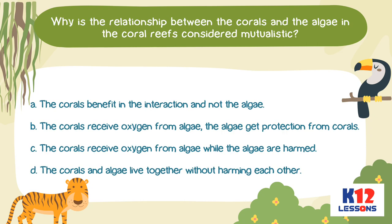Why is the relationship between the corals and the algae in the coral reefs considered mutualistic? A. The corals benefit in the interaction and not the algae. B. The corals receive oxygen from algae, and the algae get protection from corals. C. The corals receive oxygen from algae while the algae are harmed. D. The corals and algae live together without harming each other.